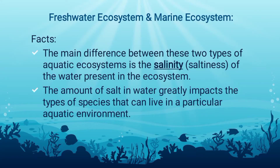The main difference between freshwater and marine ecosystems is the salinity, or the saltiness of the water present in that ecosystem. The amount of salt in water greatly impacts the types of species that can live in a particular aquatic environment.